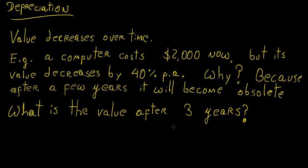To give you an example of that, consider that you buy a computer now that costs $2,000, but then you predict that its value is going to decrease by 40% per annum. So every single year that passes, its value is going to decrease by 40%. So you won't be able to sell it for more than you bought it for in the first place.